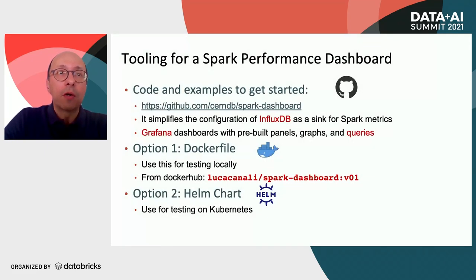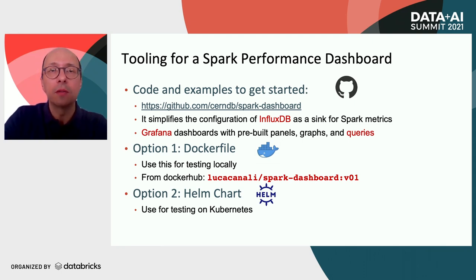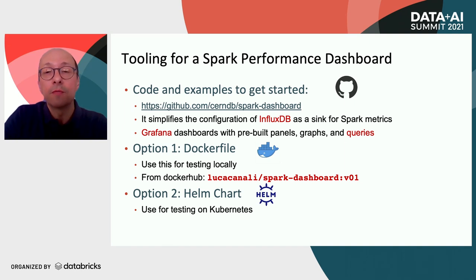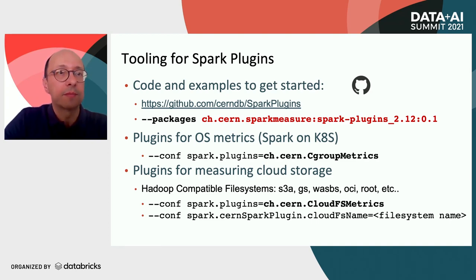There is a bit of complexity in setting up the infrastructure for a Spark dashboard. The repository mentioned in this slide provides code and examples that you can use to get started. You can run the instrumentation on a Docker container, which takes care of configuring InfluxDB and comes with pre-built Grafana dashboards. You can also find details on how to install the dashboard using a Helm chart. There is a package and a configuration that you need to set if you want to use these plugins.